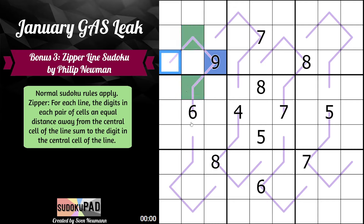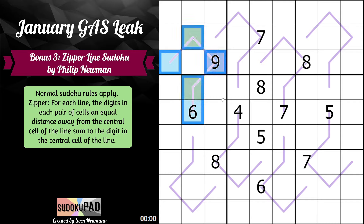Then these two cells, which are two steps away from the central cell, must also sum to nine. That applies for all of the zipper lines throughout the puzzle.